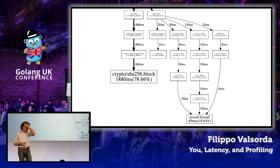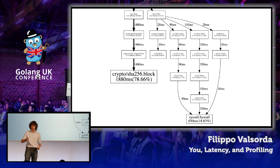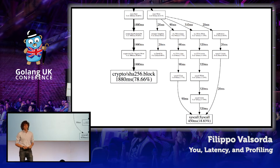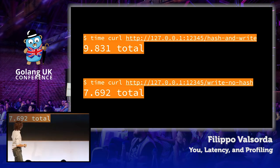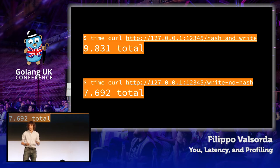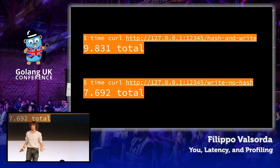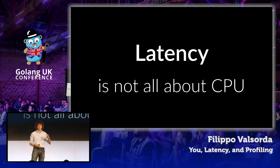We remove that hash call, expecting it to be fast now. We profiled, it was not premature optimization, we did our job. We run time curl again — and what happens? We only shaved off a couple of seconds. It's still taking 7.5 seconds. Why? We removed something that was taking 80% of the CPU time. How is it that it didn't go down by 80%? Well, a lot of the time was invisible to the CPU profiler because a lot of the time was spent blocking. Latency is not all about what happens on the CPU.